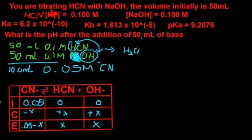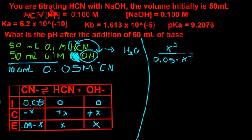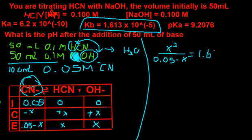So then this will give us, I'm going to draw a line right here. This is going to give us our x squared over top of 0.05 minus x. And this is equal to our Kb. We're not doing Ka anymore, because this is a base reaction here. And that's equal to 1.613 times 10 to the negative 5.